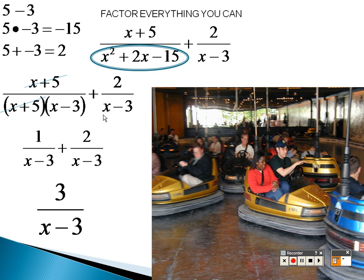If you didn't see that from the start, you could have multiplied by an x plus 5 on both the top and the bottom and realized that things will eventually cancel out after you factor.